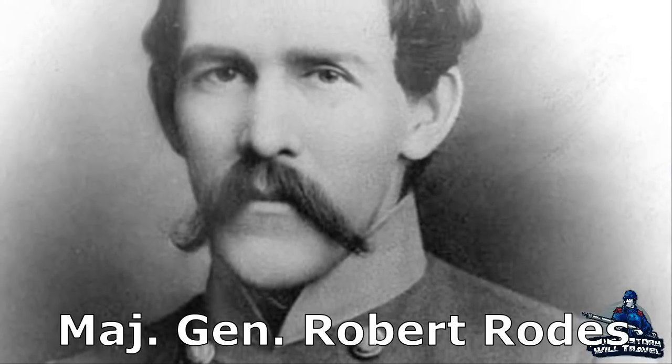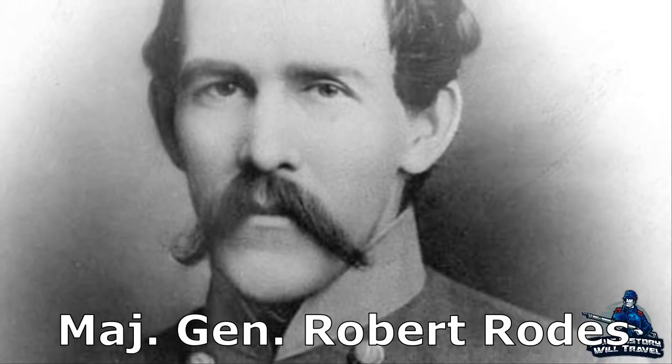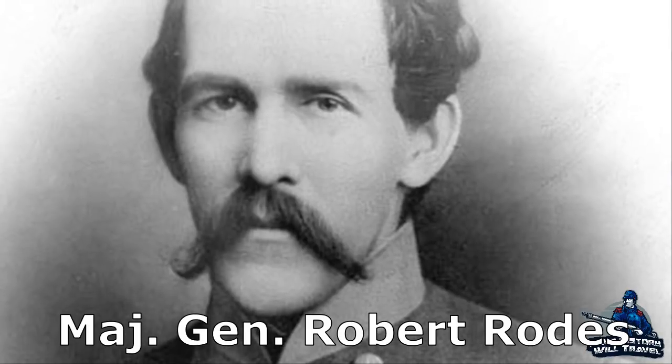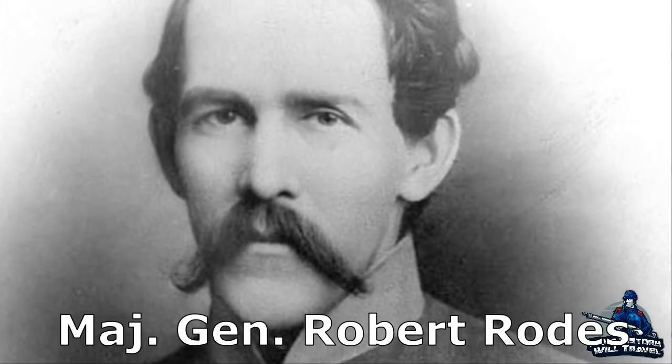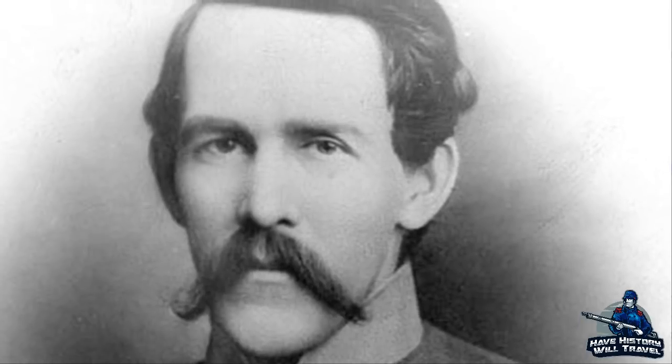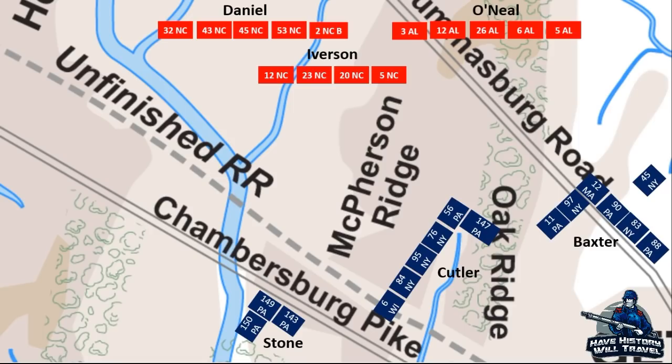One of Lieutenant General Richard S. Ewell's divisions under Major General Robert Rhodes was moving south and would soon engage with the newly positioned Union troops of the First Corps on Oak Ridge. Lysander Cutler's brigade had tangled with Davis' brigade of Heath's division earlier and took up the position on Oak Ridge. Baxter's brigade would move to Cutler's right. Colonel Roy Stone's men had also engaged with Davis and pulled back to the Chambersburg Pike.